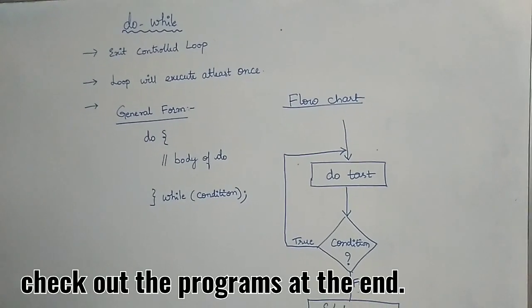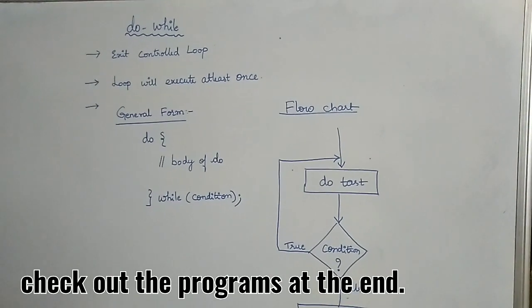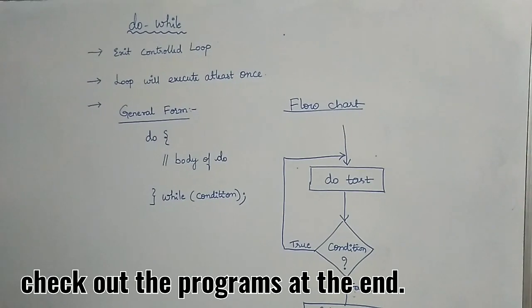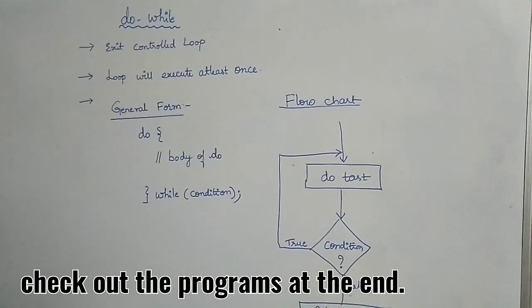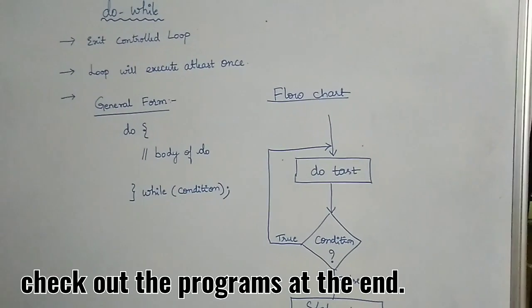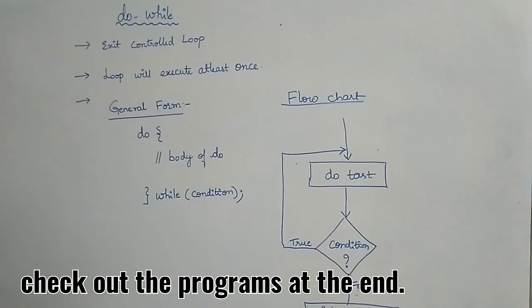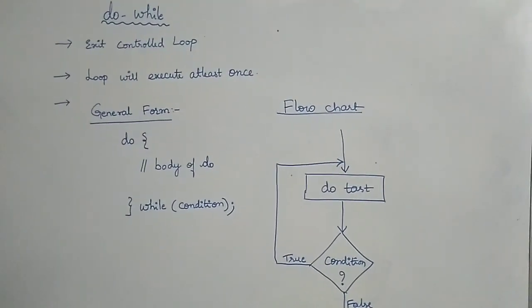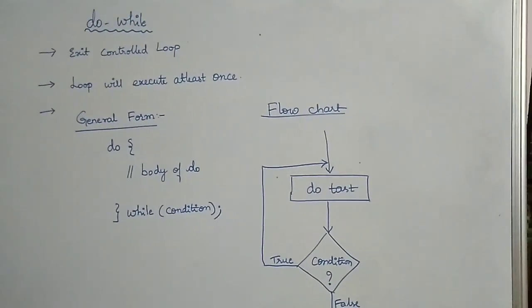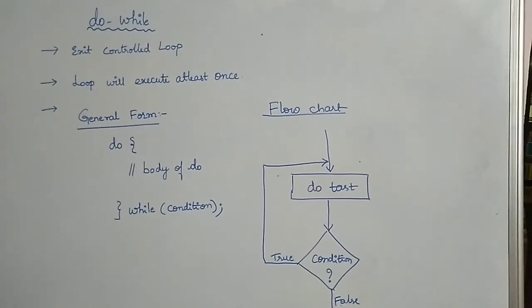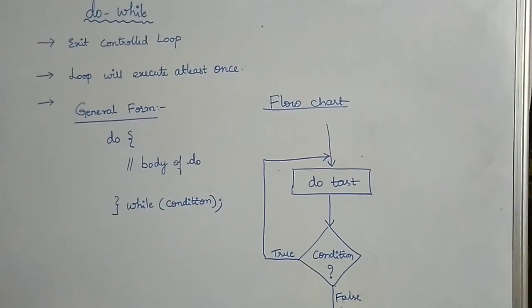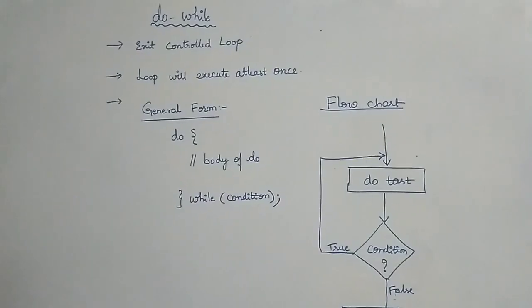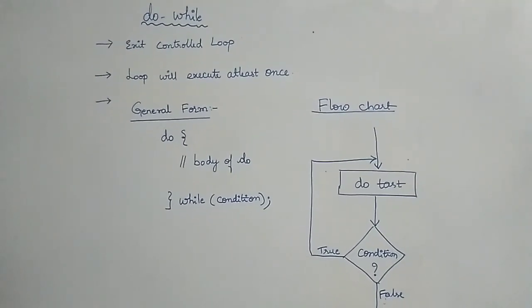For do-while, the analogy is going to an ATM center. Even if your card is invalid, at least the ATM machine will show you the welcome message first. Then your card is inserted and evaluated — if the card is valid, the transaction proceeds; otherwise it asks you to leave. So at least once, something is executed before the condition is checked.